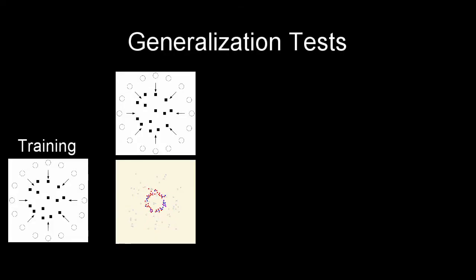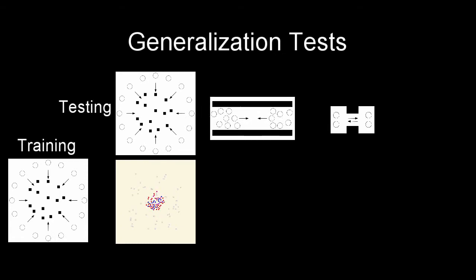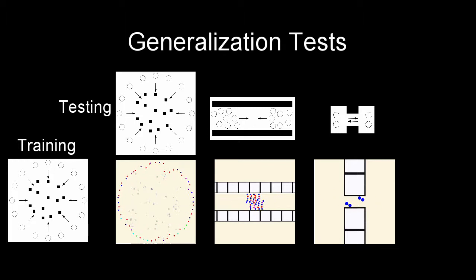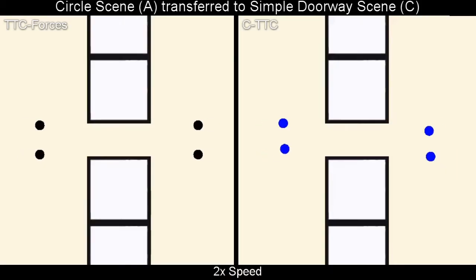We train the parameters of M on one scenario, but these parameters can be applied to other scenarios, typically with efficient behavior. Here are some examples of the circle scenario generalizing.